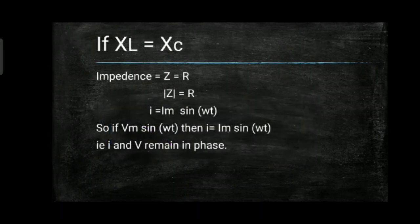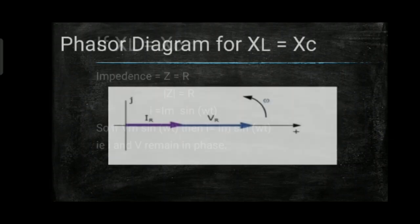Third condition: XL equals XC. Impedance Z = R, and |Z| = R. The current equation becomes i = Im sin(ωt). So if V = Vm sin(ωt), then I = Im sin(ωt), meaning voltage and current remain in phase. Below is the phasor diagram for XL equal to XC. Thank you.